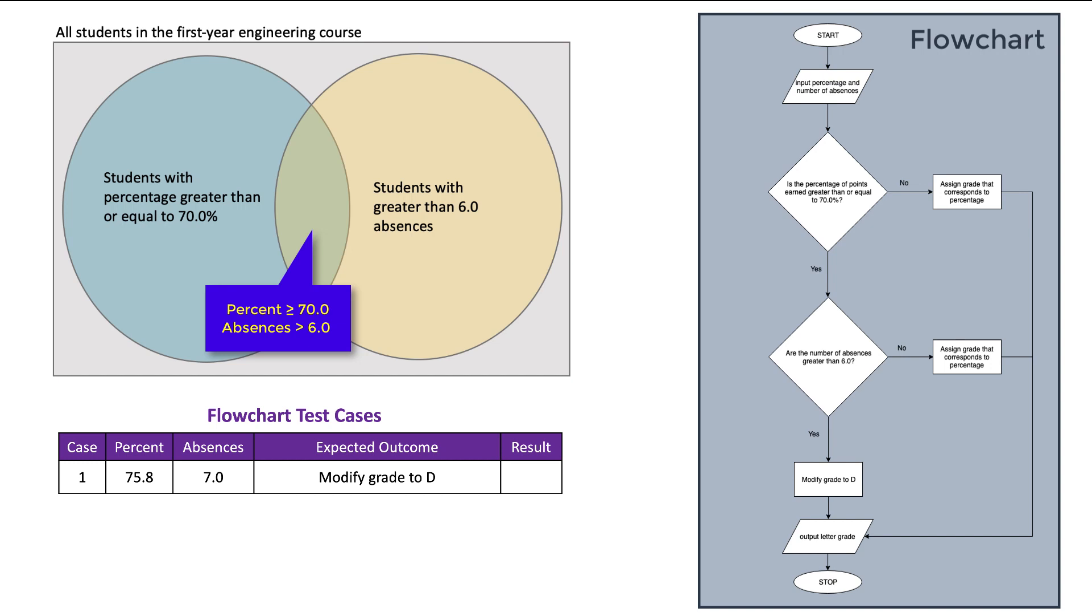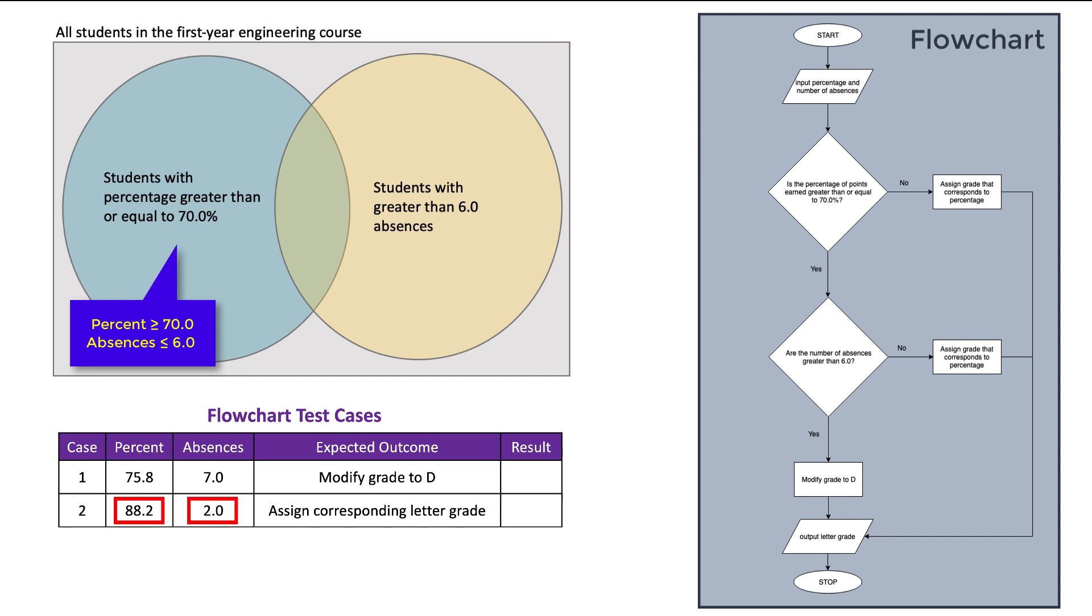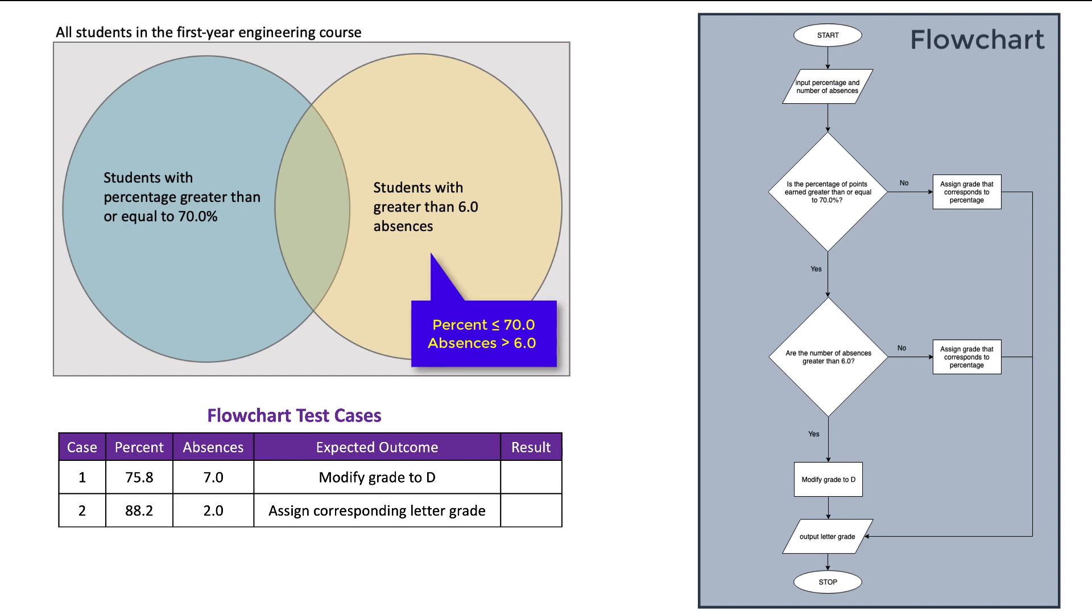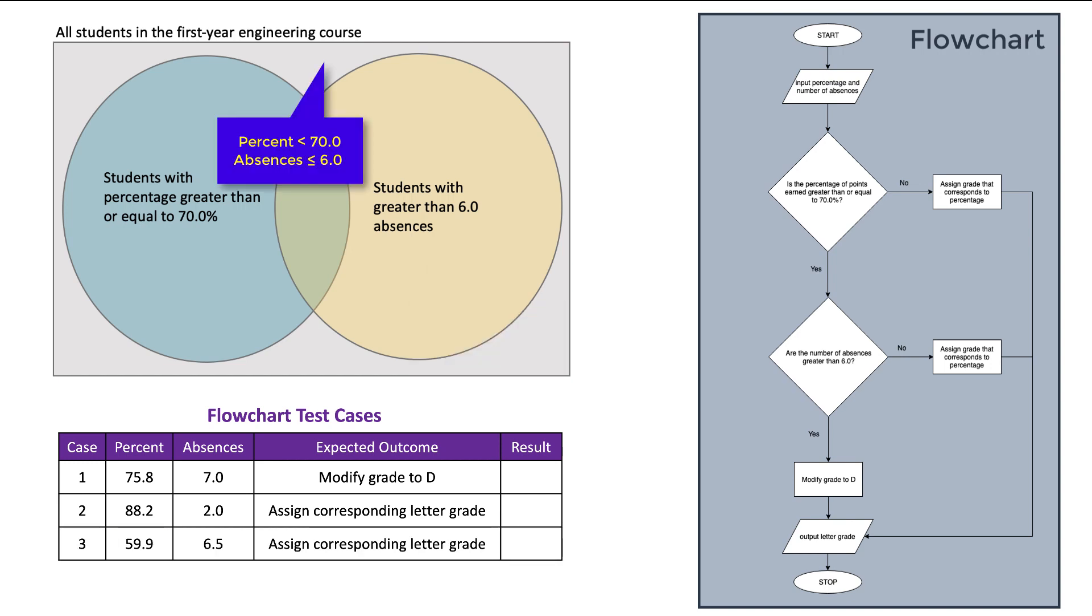Then I need a test case from all other sections of the Venn diagram. So let's consider the part of the left circle, not in the overlap. Let's also get a test case from the right circle, not in the overlap. Finally, I need an example that is just in the gray space outside of the circles.